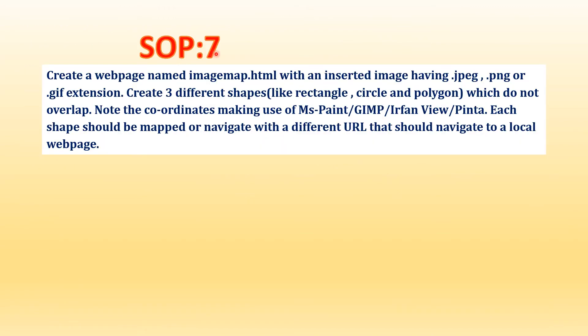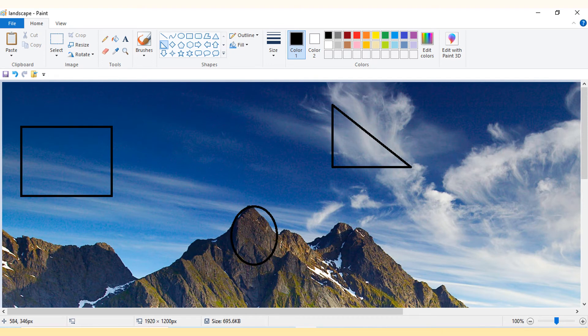Next is SOP 7. Create a web page named imagemap.html with an inserted image having jpg, png, or gif extension. Create three different shapes — rectangle, circle, and polygon — which do not overlap. Note the coordinates using MS Paint. Each shape should be mapped to a different URL that navigates to a local web page. When you get this SOP, first write the coding in your answer sheet, leaving gaps where coordinates go, then open MS Paint to get the coordinates.